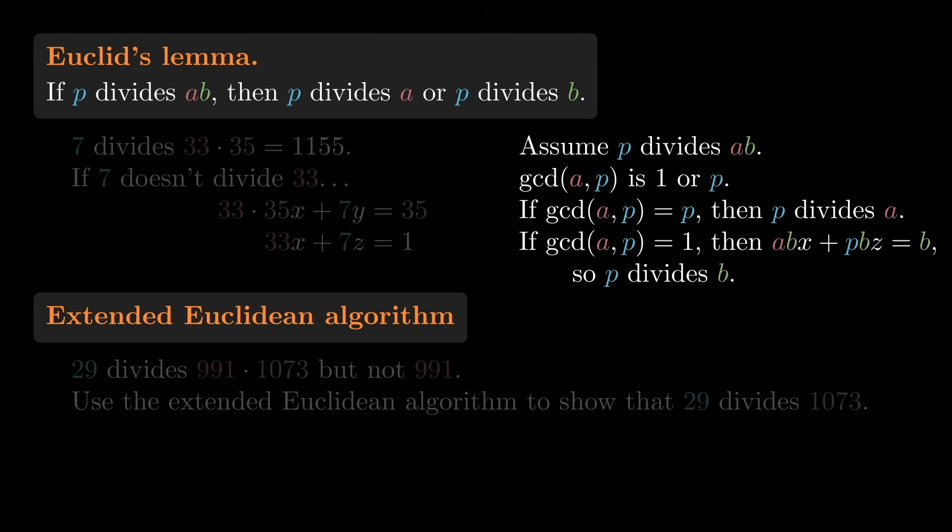So the proof of Euclid's Lemma uses the extended Euclidean algorithm in this totally bizarre way. We need to invoke the extended Euclidean algorithm, but we don't need to actually run it. I love it.